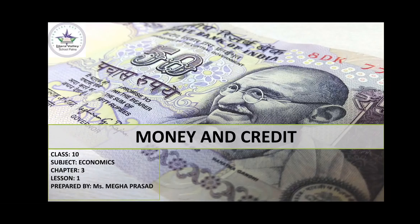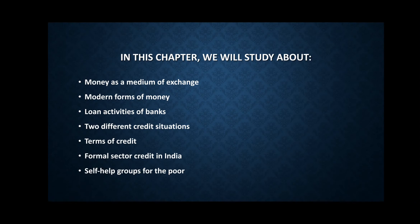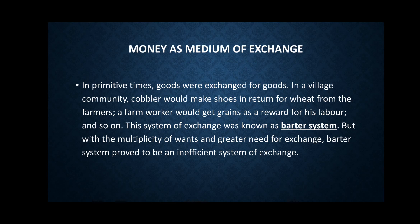Good morning dear students. Today we shall begin with the third chapter of economics. The name of the chapter is Money and Credit. In this chapter we will study about money as a medium of exchange, modern forms of money, loan activities of banks, two different credit situations, terms of credit, formal sector credit in India, and self-help groups for the poor. Today we shall study about the first two topics: money as medium of exchange.